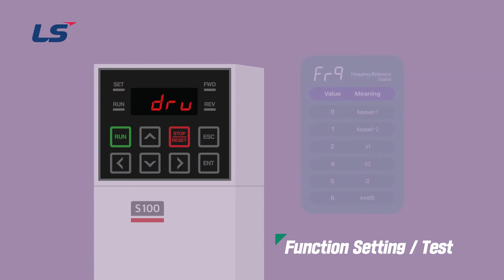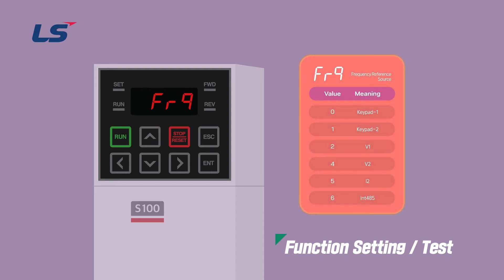Next, let's edit the frequency setting method. The frequency setting method can be changed in the operation group FRQ. The meaning of the numbers shown on the keypad screen is the same as the table shown on the screen. The initial value of 0 allows you to set the frequency on the keypad.